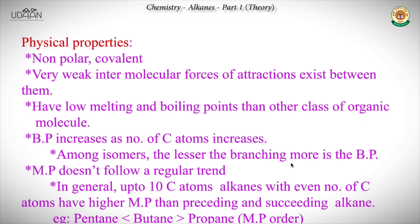So if you have more branching, you have a more compact molecule as opposed to straight chains. There is lesser surface area and lesser attraction. As a result, you need to provide lesser heat to boil it, which means the boiling point decreases.